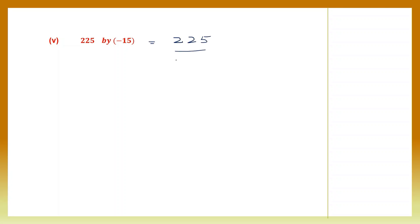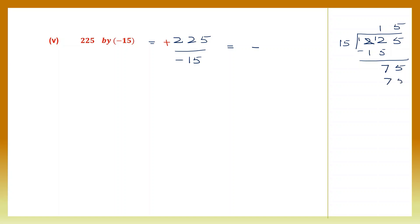Question 5: divide 225 by minus 15. 225 doesn't have a sign, so it's understood as plus — signs are different, so the answer is negative. Dividing 225 by 15: 15 ones are 15, bring down to get 75, and 15 fives are 75. We've got quotient 15. Our final answer is minus 15.